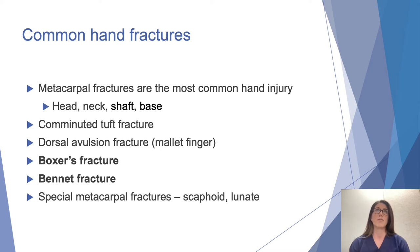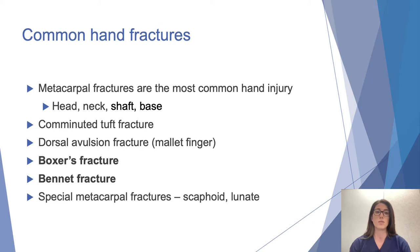Looking at common hand fractures, metacarpal fractures are the most common hand injury, but phalangeal fractures are actually the most common bony injury overall. Metacarpal fractures can be divided by location: head, neck, shaft, and base. Common specific fractures seen in the emergency department include comminuted tuft fractures, dorsal avulsion fractures (mallet fingers), boxer's fracture, and Bennett fracture. Special carpal fractures, especially of the scaphoid and lunate, won't be covered in detail here, but boxer's fractures and Bennett fractures will be discussed.